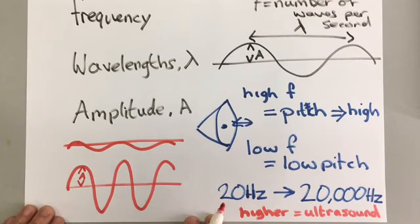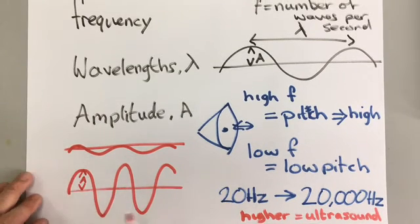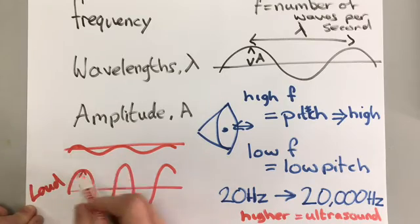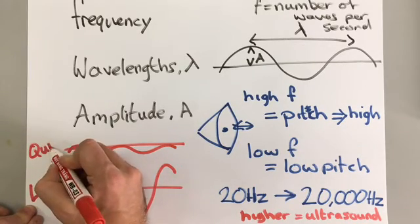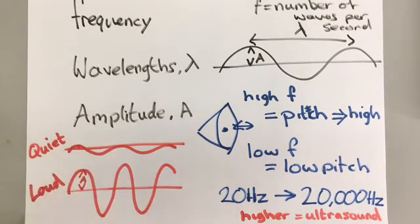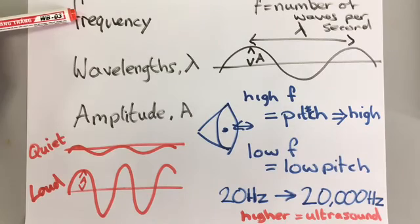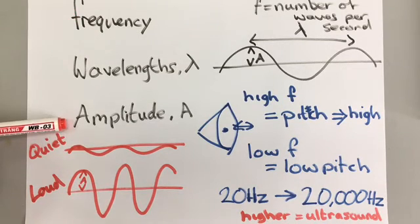Now the amplitude is related to the volume of the sound. If you have a large amplitude, then it's a loud sound. And if you have a small amplitude, then it's a quiet sound. So a sound wave can be described by its frequency, and its frequency relates to its pitch. Or its amplitude, and its amplitude relates to its volume. A large amplitude is a loud sound, a small amplitude is a quiet sound.